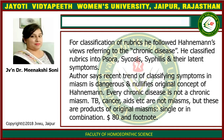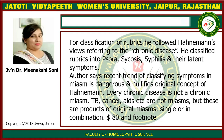For classification of rubrics, Kent followed Hahnemann's review referring to chronic disease, classifying rubrics into Psora, Sycosis, and Syphilis as latent symptoms. Some authors say the recent trend of classifying symptoms by miasm is dangerous and misrepresents the original concept. Every chronic disease is not a chronic miasm — TB, cancer are not true miasms. Properly, only three miasms exist: Psora, Syphilis, and Sycosis. TB, cancer, AIDS, and even corona may be considered miasms by some, but they are not true original miasms.